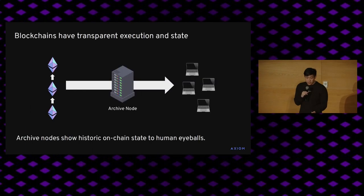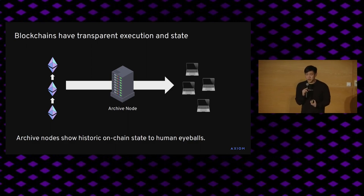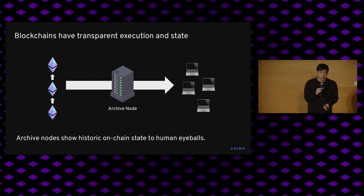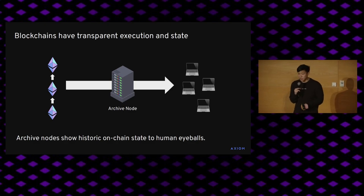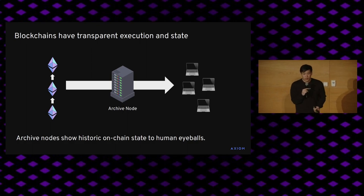Before we get into what reflection actually is in a blockchain context, I want to review how humans actually access information about the chain. The special property of blockchains is that all execution and state, at least at present, is transparent and publicly verifiable. As a normal user, you would typically access a blockchain by first finding an archive node, either one you're running yourself or perhaps run by a service like Infura or Alchemy. Archive nodes really are there to feed on-chain information to human eyeballs.